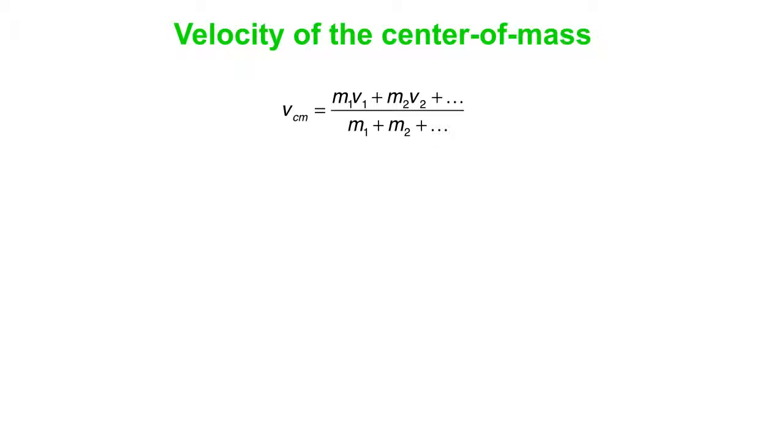Okay, so we're treating the system as being made up of objects 1, 2, 3, etc., each with its own mass and its own velocity. Put them together in this way, you get the velocity of the center of mass.